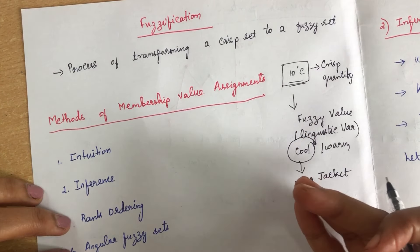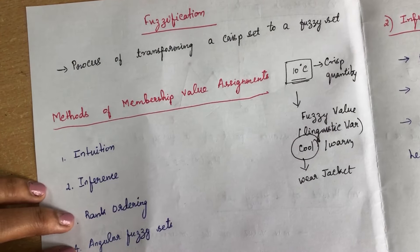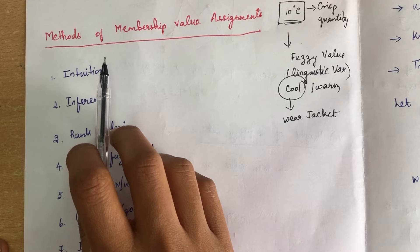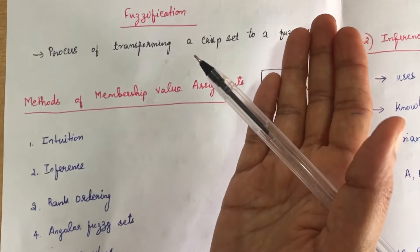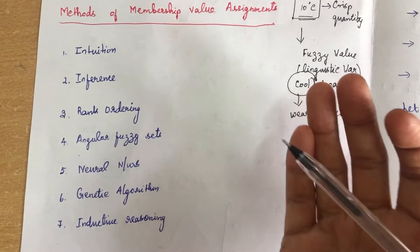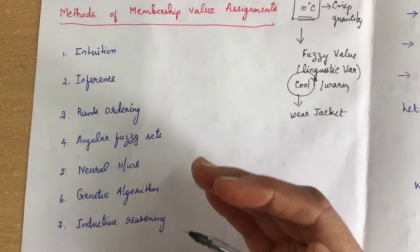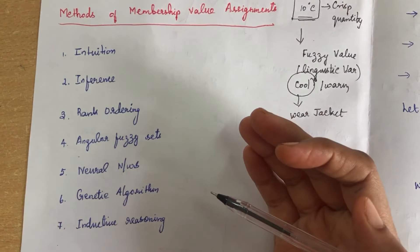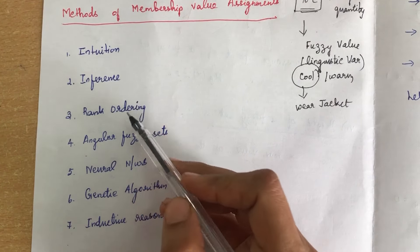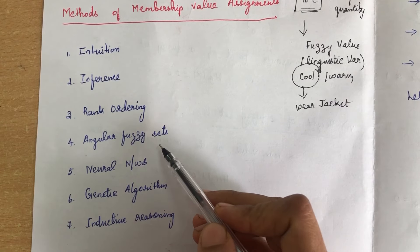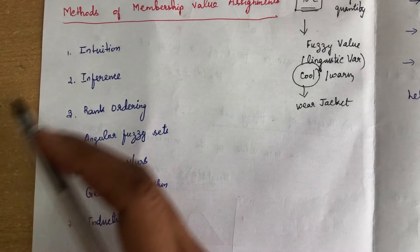De-fuzzification is the reverse process, converting the fuzzy value back into a crisp value. There are several ways to assign membership values to fuzzy variables. After converting crisp values into fuzzy values, we draw a membership function to derive the degree of truthness or fuzziness. The methods for drawing membership functions include: intuition method, inference, rank ordering, angular fuzzy set, neural networks, genetic algorithm, and inductive reasoning. We will see them one by one.